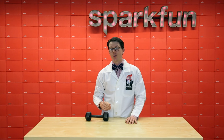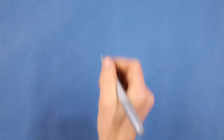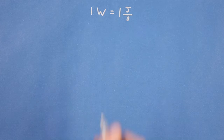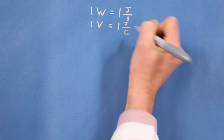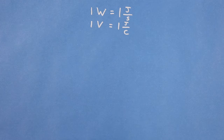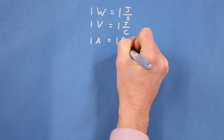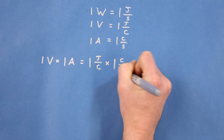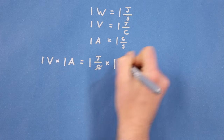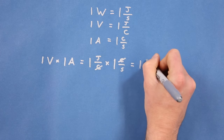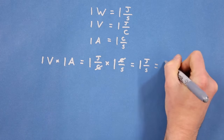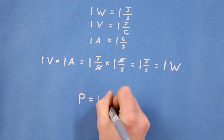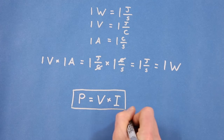With that understanding of power, let's see how this relates to electric power. One watt is equal to one joule per second. We know that the volt is equal to one joule per coulomb, and the ampere is one coulomb moving past a point per second. If we were to multiply a volt times an ampere, we could cancel out the coulomb units and we'd get one joule per second — that's the definition of a watt.